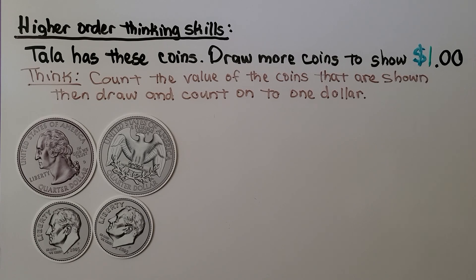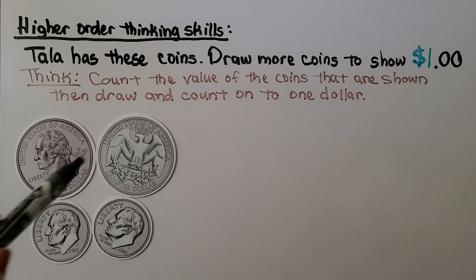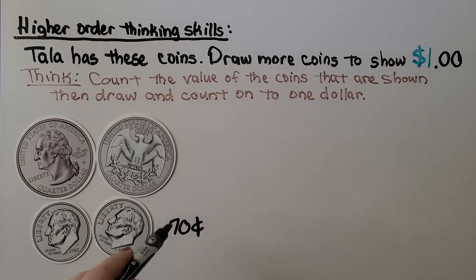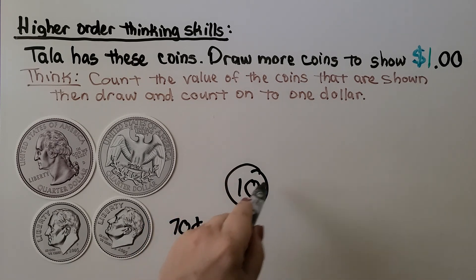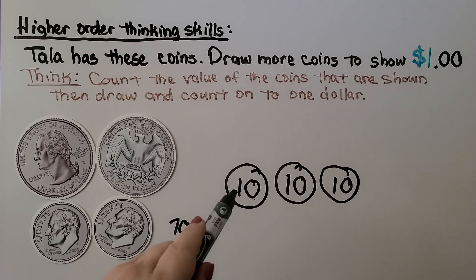Let's try some higher order thinking skills. Tala has these coins — draw more coins to show $1. We count the value of the coins shown, then draw and count on to $1. We have 2 quarters and 2 dimes: 25 and 25 is 50, and 10 more is 60, and 10 more is 70 — so she has 70 cents. We need to draw coins to reach a dollar. Drawing a dime gets us to 80 cents, another dime to 90 cents, and one more dime to 100 cents — that would be a dollar. We also could have drawn 6 nickels or 30 pennies, but it was a lot easier to just draw 3 dimes.